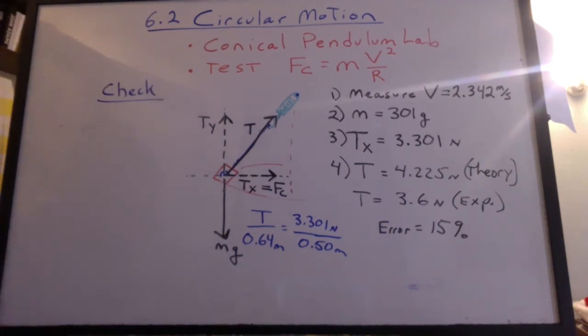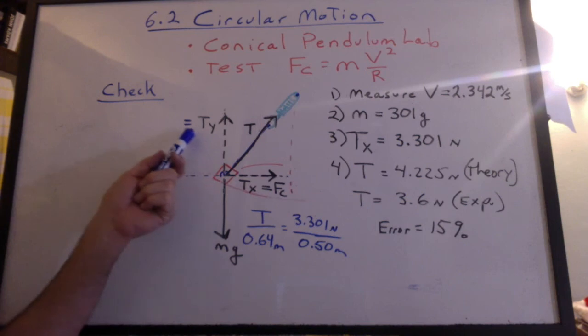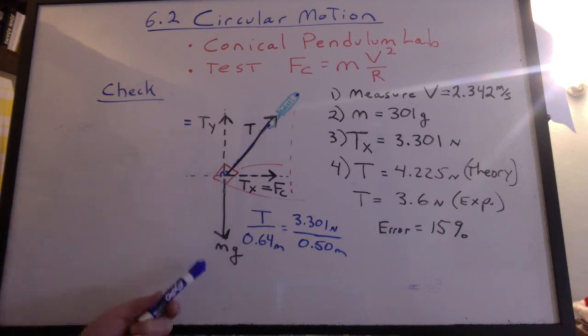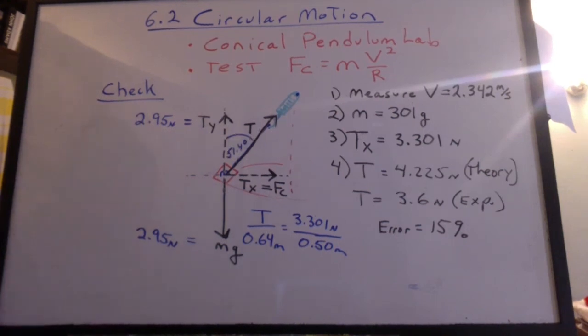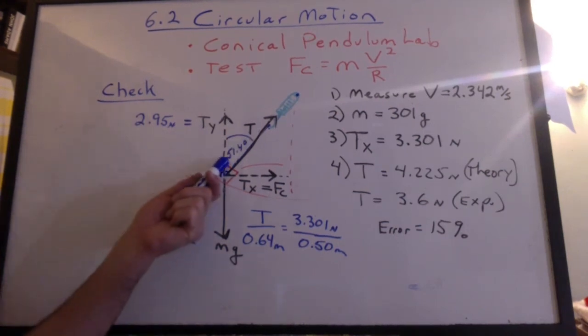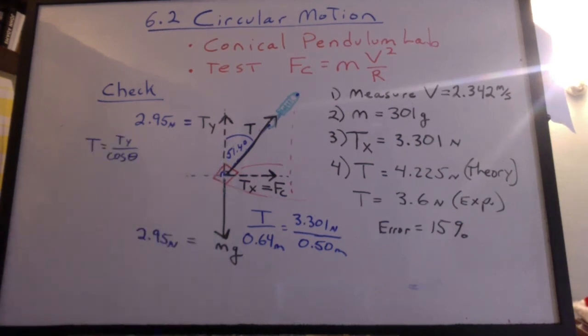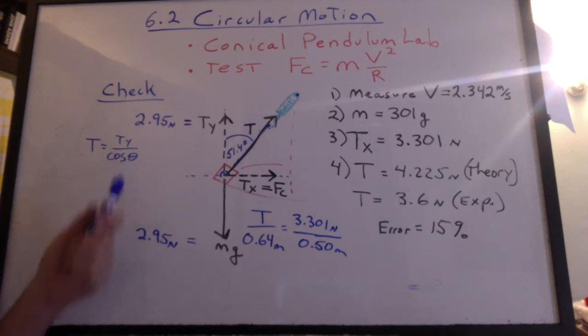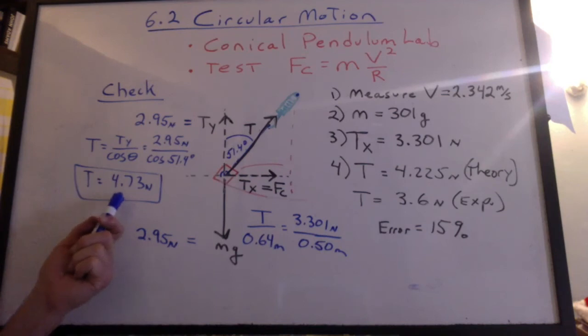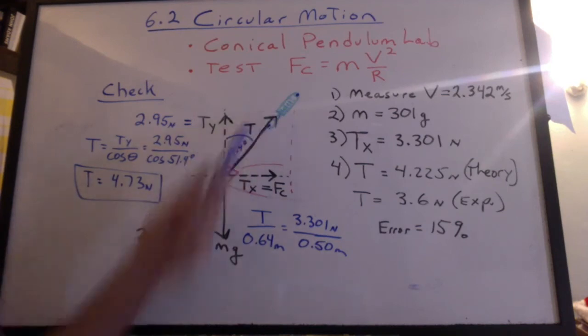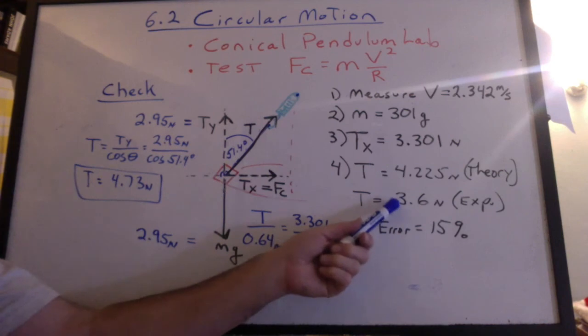How about a check for our answer? If the weight doesn't fall or rise, the tension in the y direction has to equal mg. If the weight's 2.95 newtons, mg, y component of the tension has to be 2.95 newtons. And from those distances, we know that's 51.4 degrees. Well, we can say the tension in the rope is equal to tension in the y direction divided by cosine theta. Remember the numbers? Well, just based on the geometry, I should be getting 4.73 newtons on that spring scale. Yeah, I'd say I had a pretty bad grab.